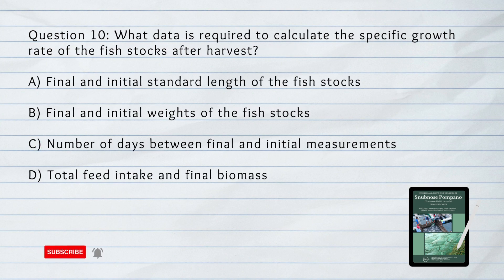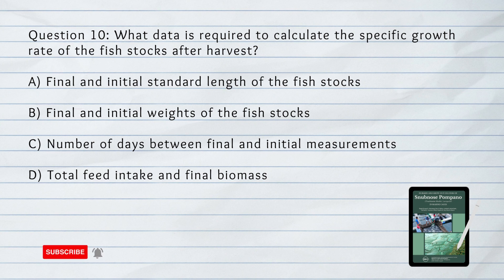Number 10. What data is required to calculate the specific growth rate of the fish stocks after harvest? A. Final and initial standard length of the fish stocks. B. Final and initial weights of the fish stocks. C. Number of days between final and initial measurements. D. Answer: B. Final and initial weights of the fish stocks.